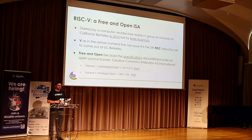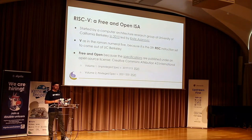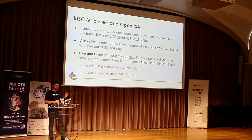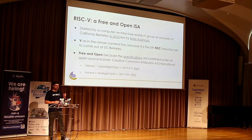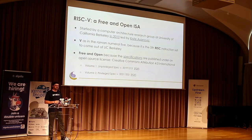RISC-V is a free and open instruction set architecture, or ISA. It was started by a computer architecture research group at UC Berkeley back in 2010, led by Krste Asanovic. The V is the Roman numeral five, because it's the fifth RISC instruction set to come out of UC Berkeley. The specifications are published under an open source license — the Creative Commons Attribution license.